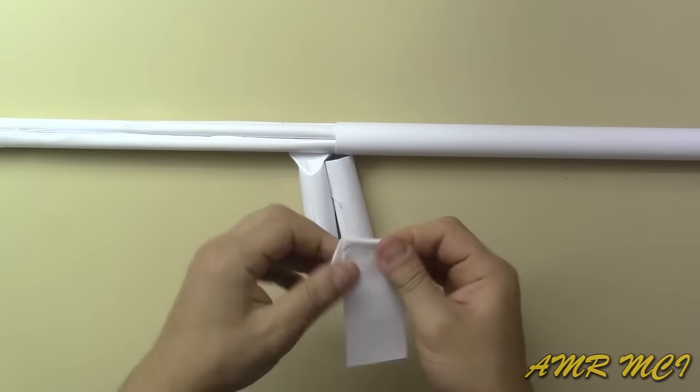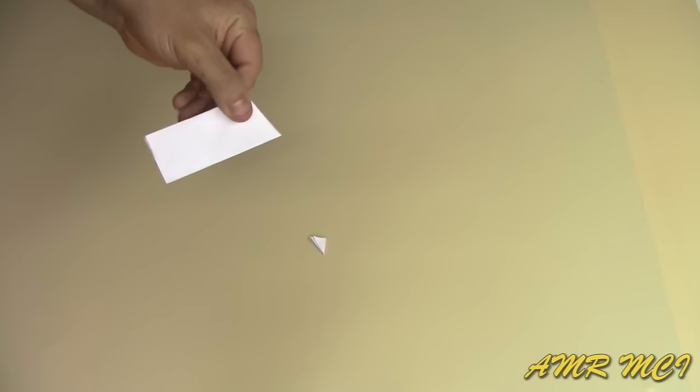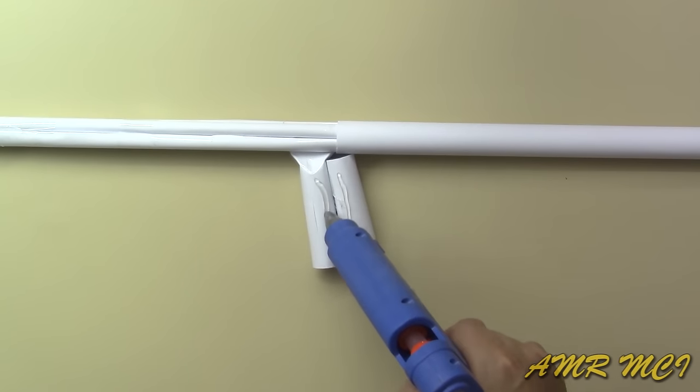Fold the top of each piece until it fits with the grip, then cut any excess paper you may have. Now glue both covers on each side of the grip.